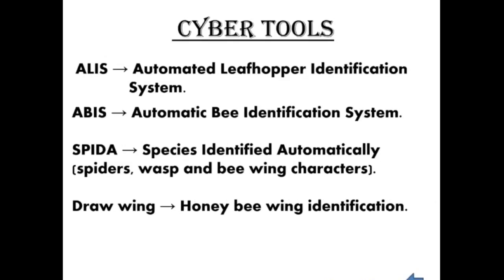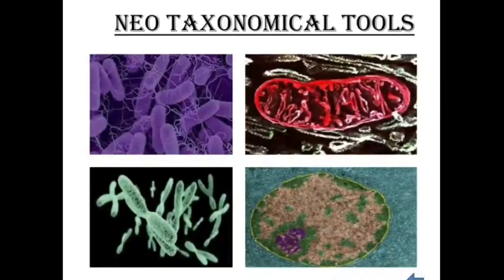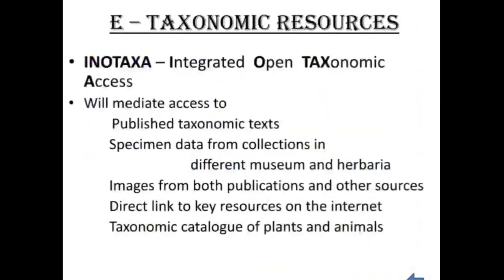All cyber tools are made up of software. The next tool is neotaxonomic tools, where electron microscopes are used to identify the molecular structure of cell organelles. E-taxonomic resources: an example is the e-taxonomic resource developed by the Natural History Museum, located in London.